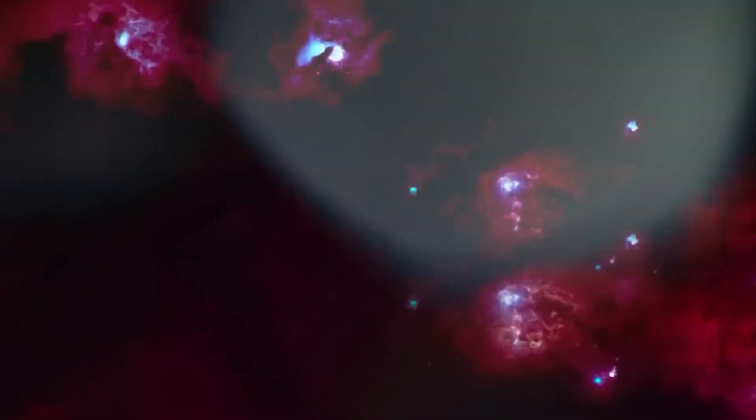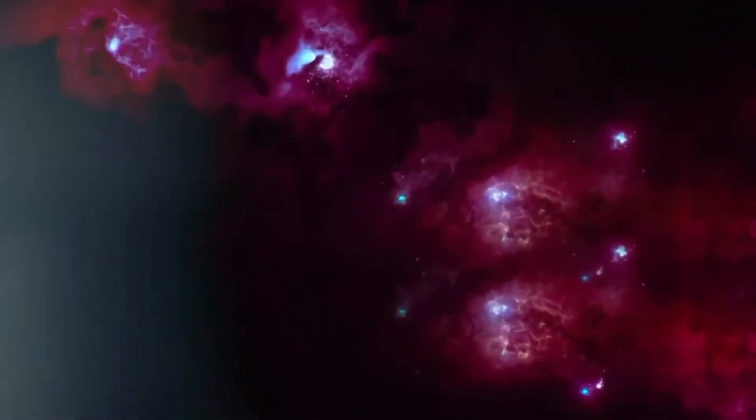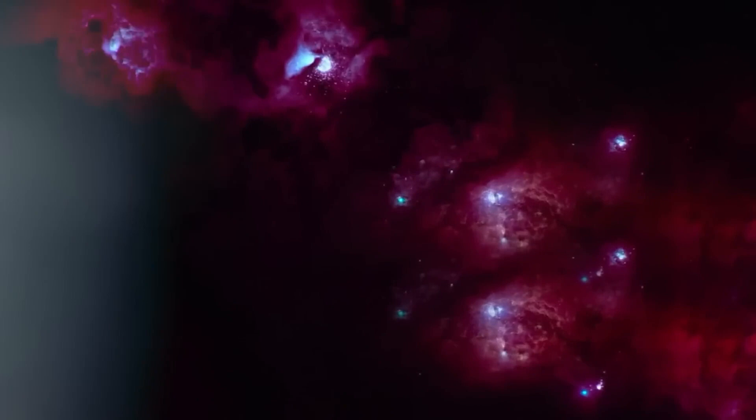What makes this even crazier is the patterns. When scientists fed Webb's data into deep learning algorithms, they noticed something eerie. The galaxies weren't just scattered randomly. Their shapes, their distributions, their orbits, they followed a kind of cosmic geometry.